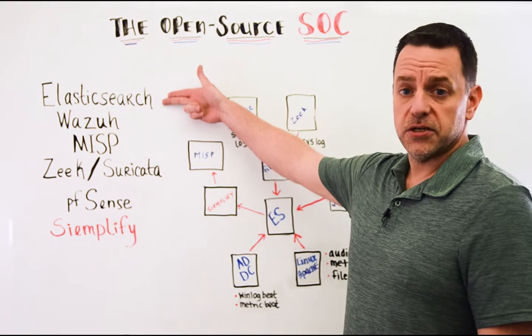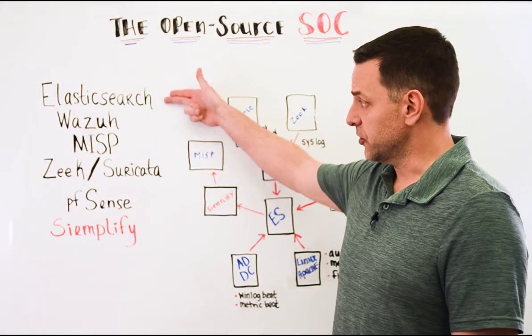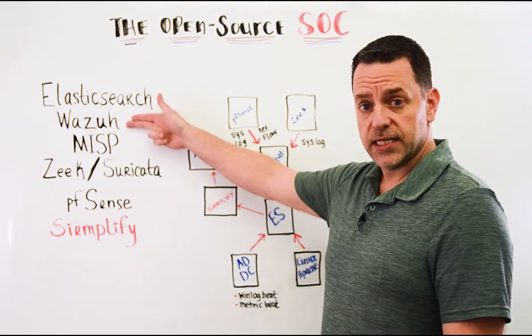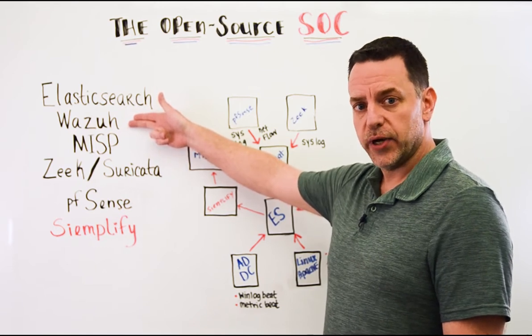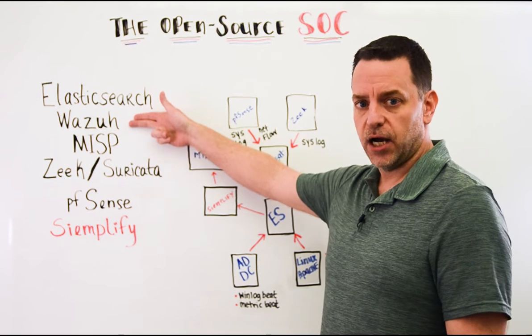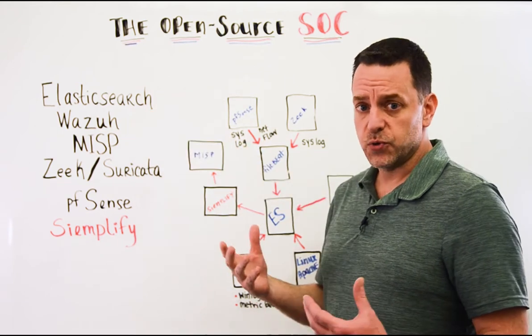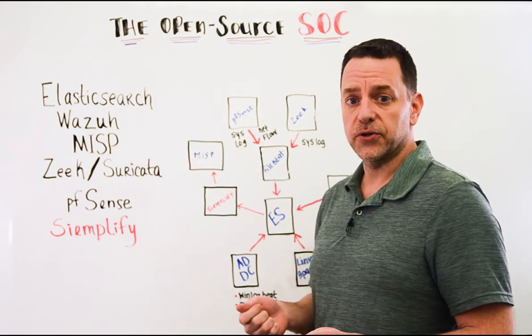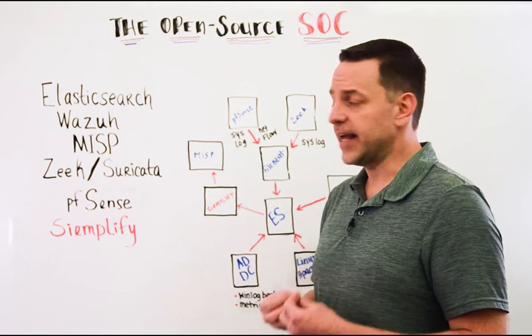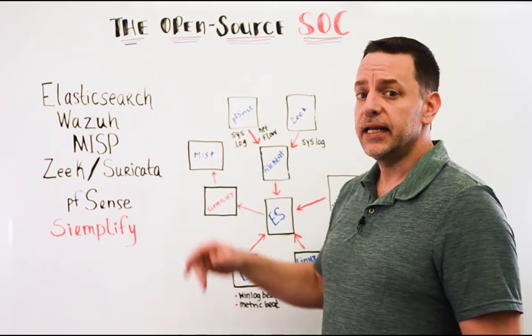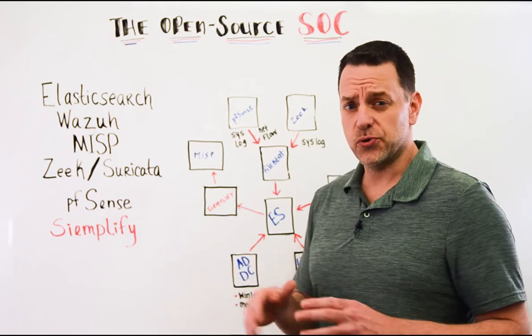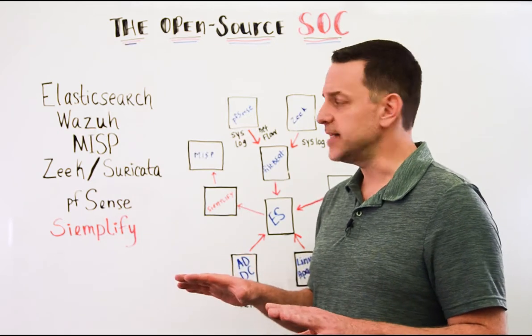At the heart is going to be our SIM solution which is Elasticsearch. Into that we're going to be ingesting Wazuh, and Wazuh is a host IDS with agents that you're able to deploy on pretty much any operating system out there. It comes with a rule base and monitoring and is a rich source of events that feeds naturally into Elasticsearch as a backend, even including a whole bunch of dashboards that make visualizing that data very easy.